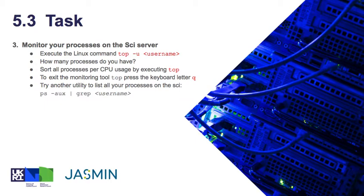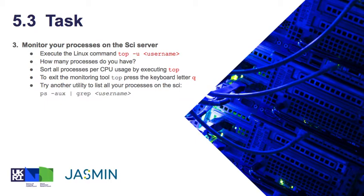In parallel to the compute, when you're running computing you need to do the monitoring. The Linux utility top followed with the option minus u and your username shows you all the processes owned by you. You can also run top without any argument and this will sort all processes per CPU usage. To exit top, since it's an interactive command utility running all the time, just press the letter Q on the keyboard. There's another utility that is also useful to know, which is the process status command PS.